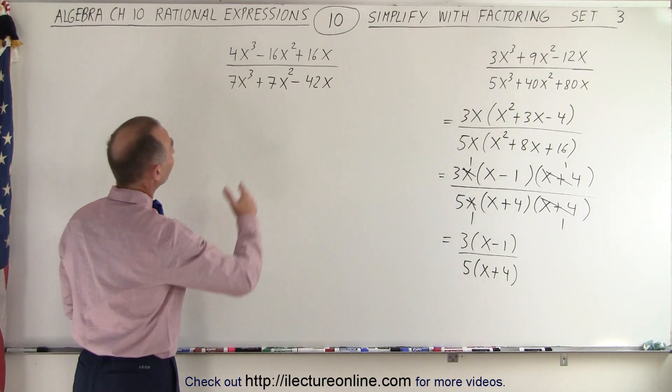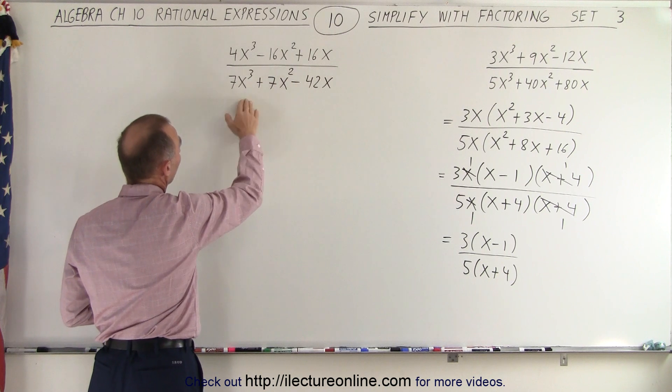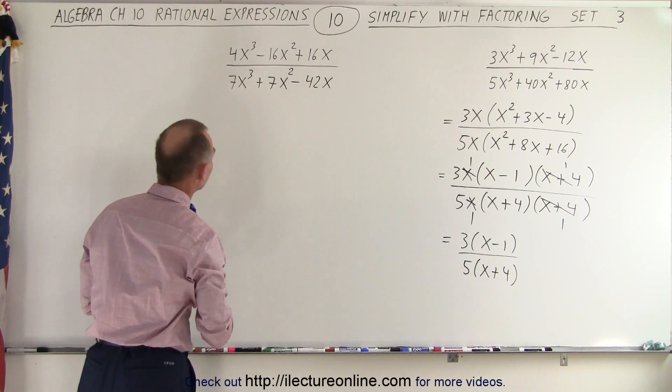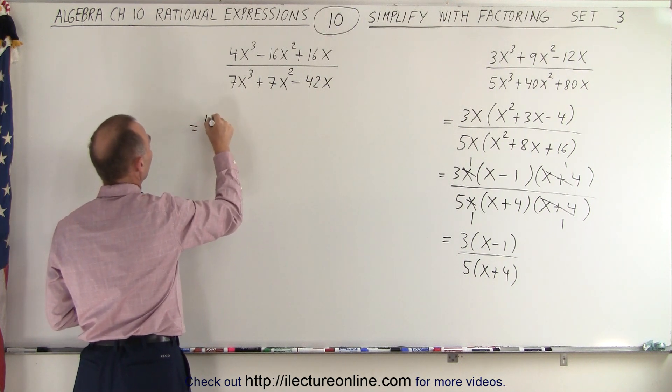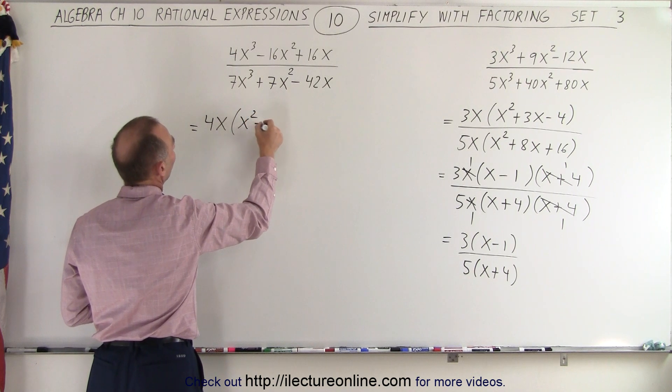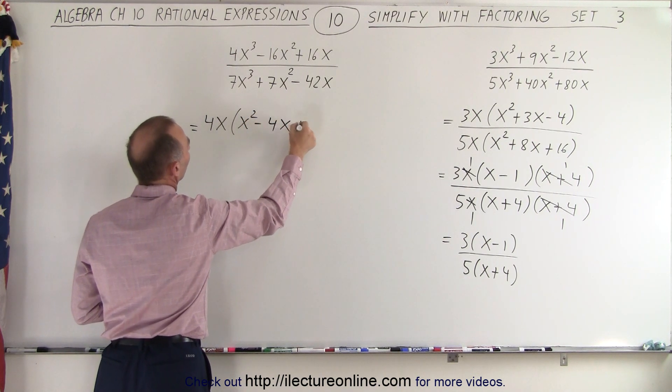Again, notice we can factor an x from both the numerator and the denominator. In the numerator, we can factor out a 4. In the denominator, we can factor out a 7. So this can be written as 4x times what's left, x squared minus 4x plus 4.